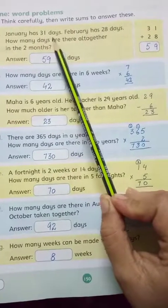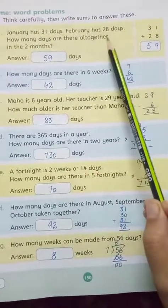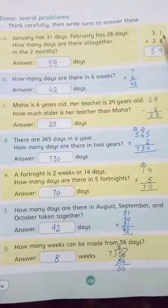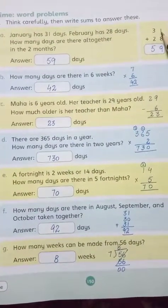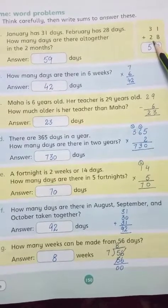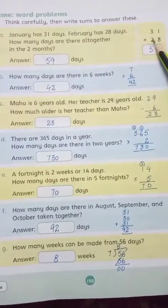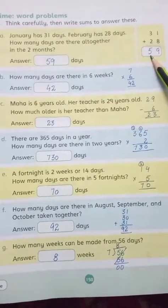Problem A: January has 31 days. February has 28 days. How many days are there altogether in 2 months? Now we will plus them. First we write January days as 31 and February days as 28. In 8 we have 1 added, 9. In 2 we have 3 added, 5. The answer is 59.